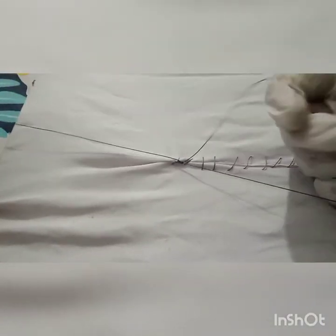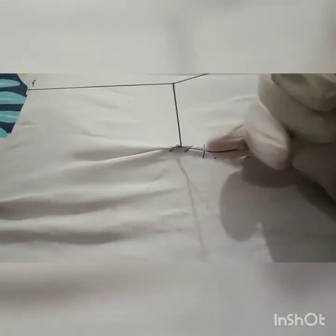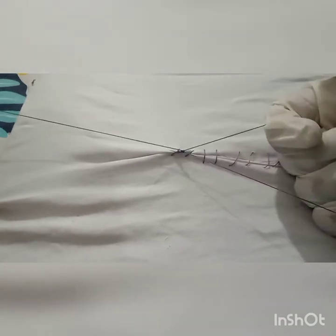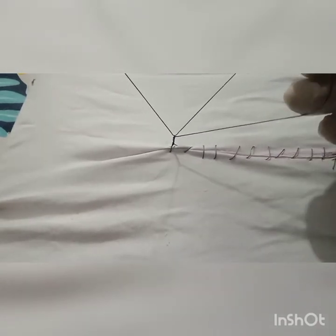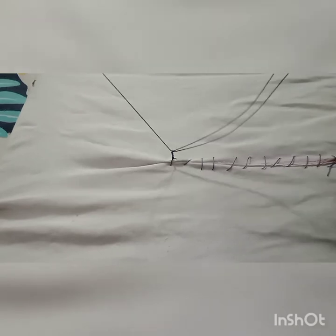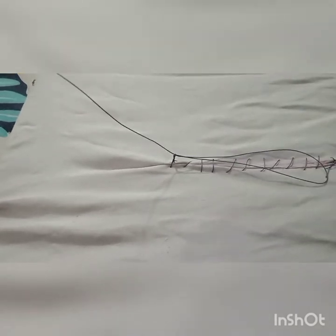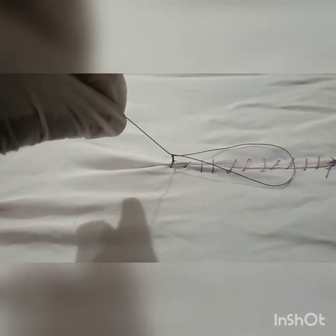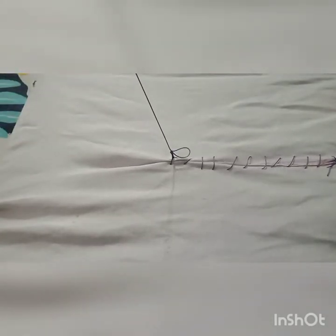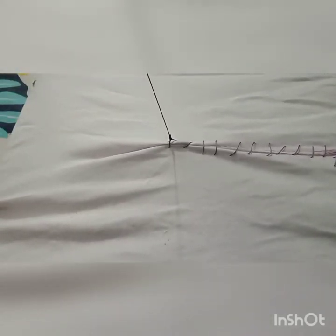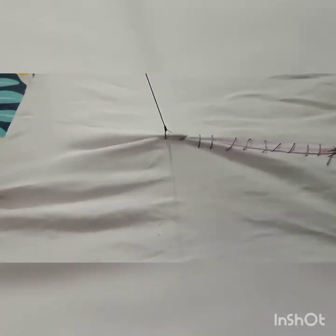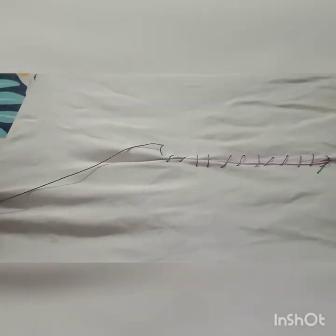So this knot is still not a secure or stable knot. With a slight pull, the limb will make it open like this. So how to make it secure?